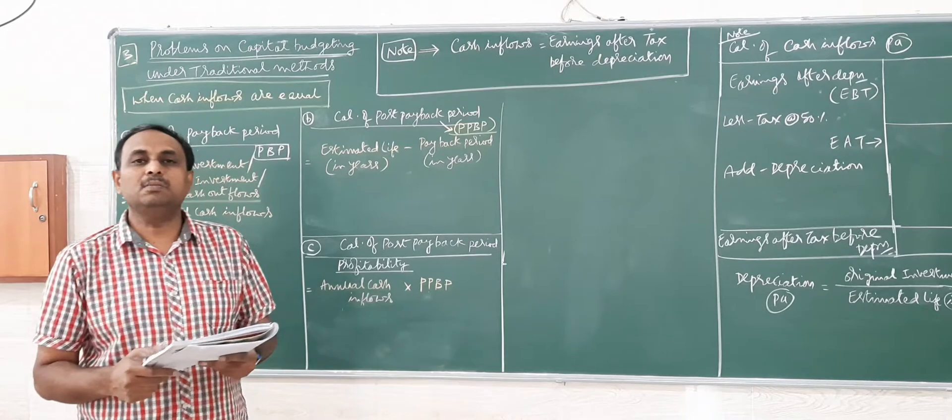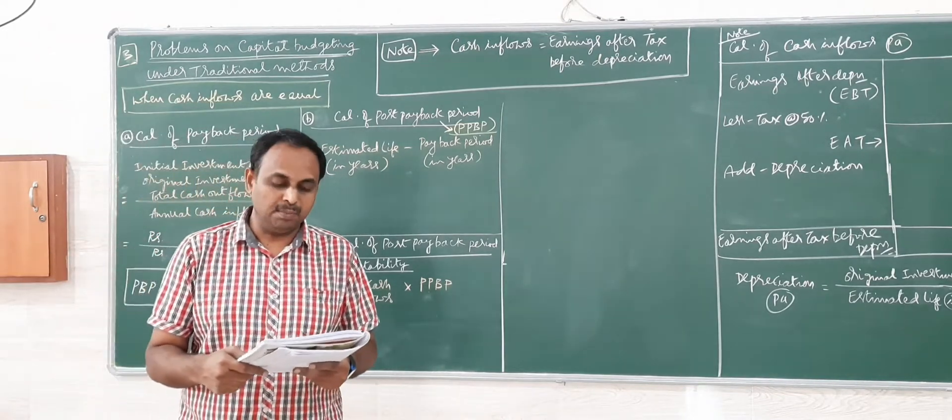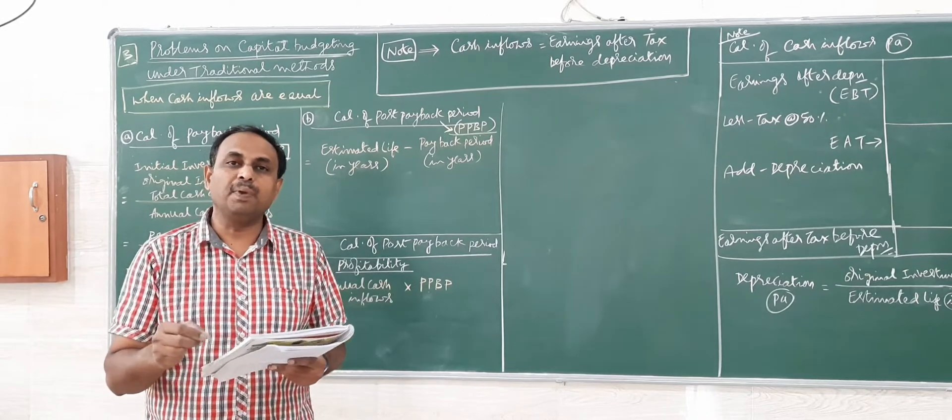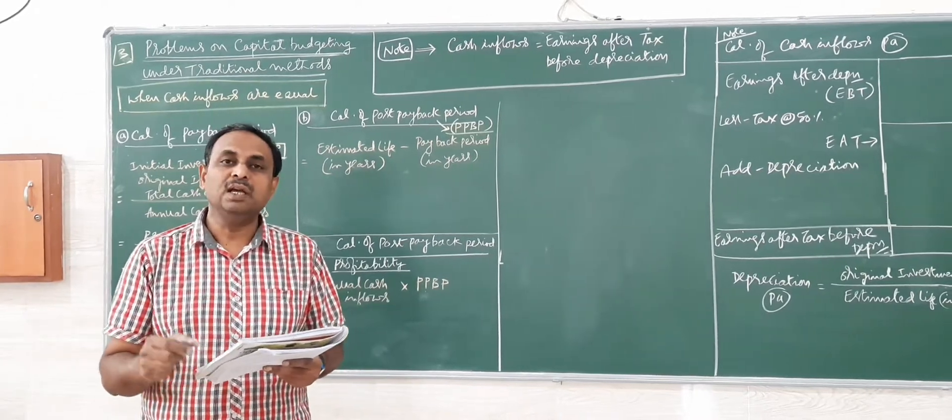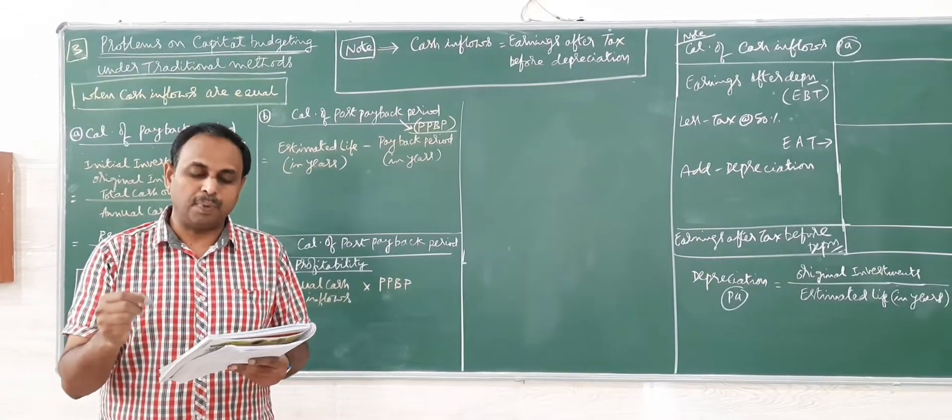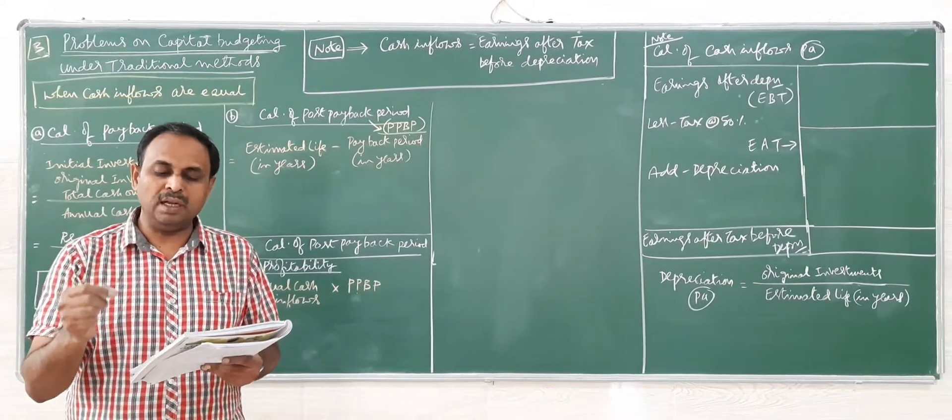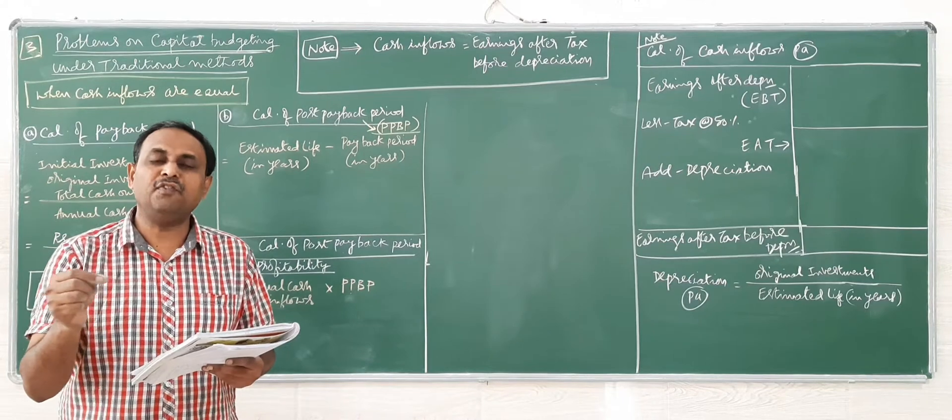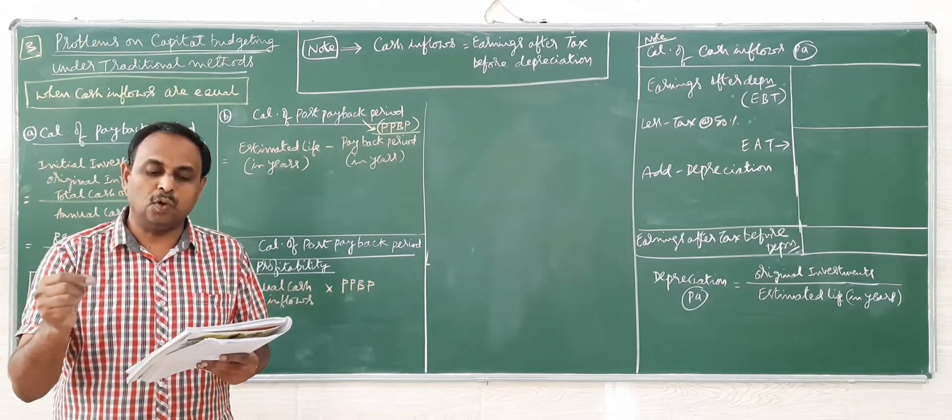The next problem under additional method of capital budgeting is a project costing Rs.560,000 which is expected to produce annual net cash benefits given in brackets as CF80, cash flow after tax.